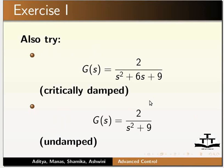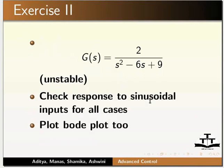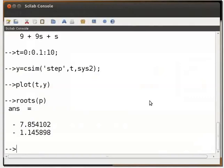G(s) = 2 / (s² + 6s + 9) is an under-damped system. G(s) = 2 / (s² + 9) is an undamped system. G(s) = 2 / (s² − 6s + 9) is an unstable system. Plot the response to sinusoidal input and plot the Bode plot. For a general transfer function, the numerator and denominator can be specified separately.